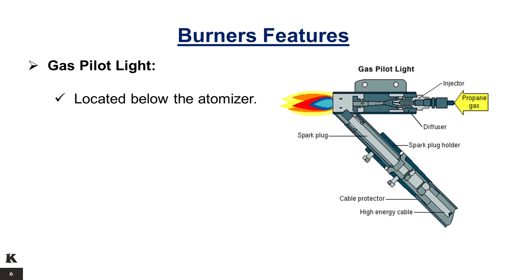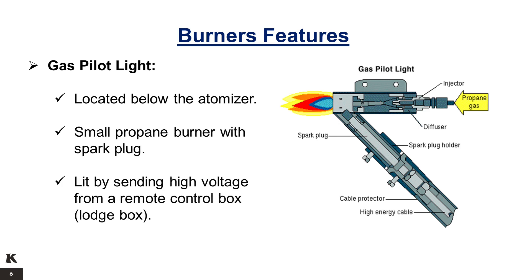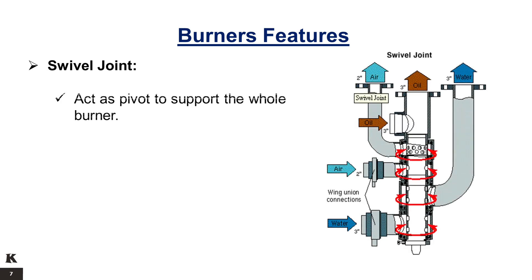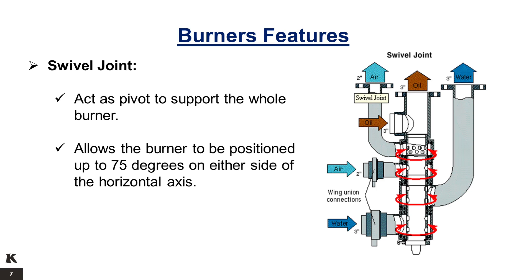The gas pilot light is located below the atomizer. It is a small propane burner with a spark plug, lit by sending high voltage from a remote control box or lodge box. The swivel joint of the burner acts as a pivot to support the whole burner, allowing the burner to be positioned up to 75 degrees on either side of the horizontal axis.